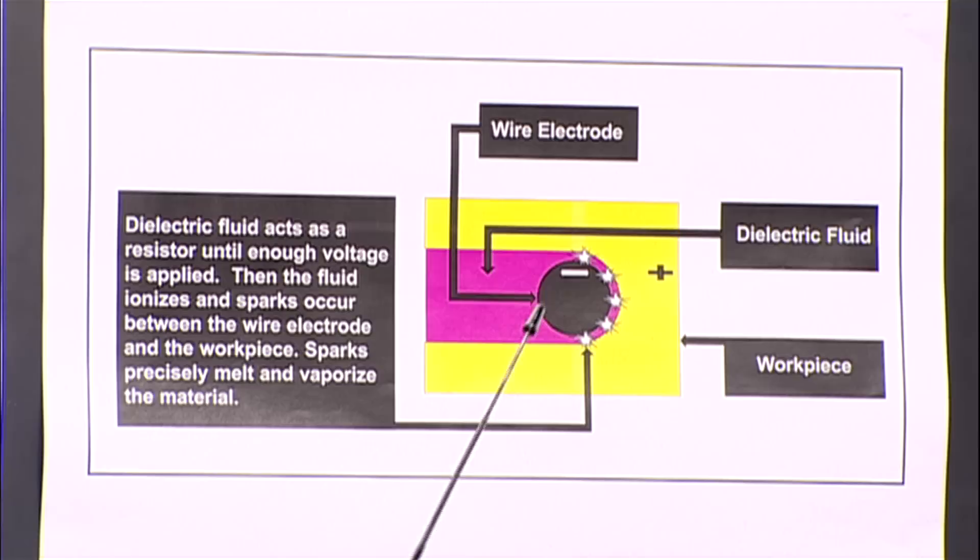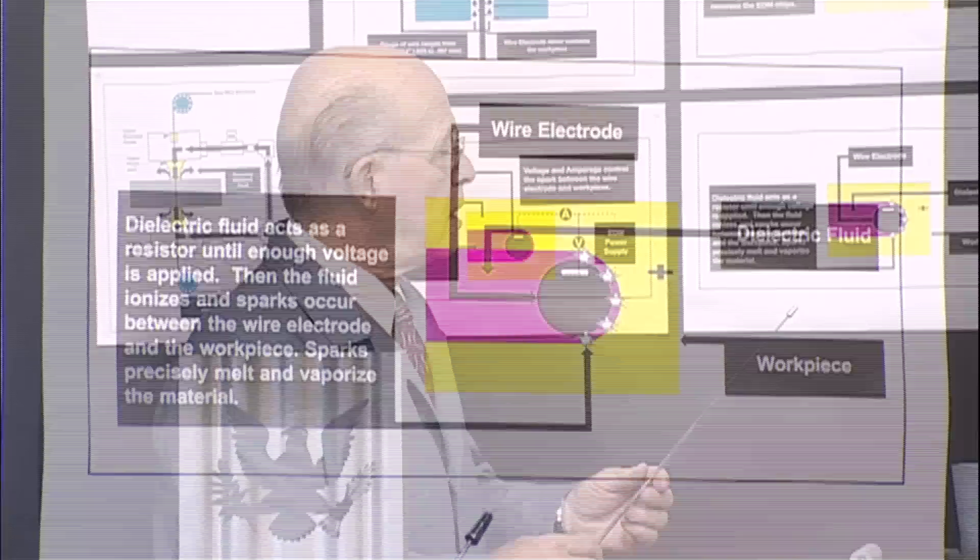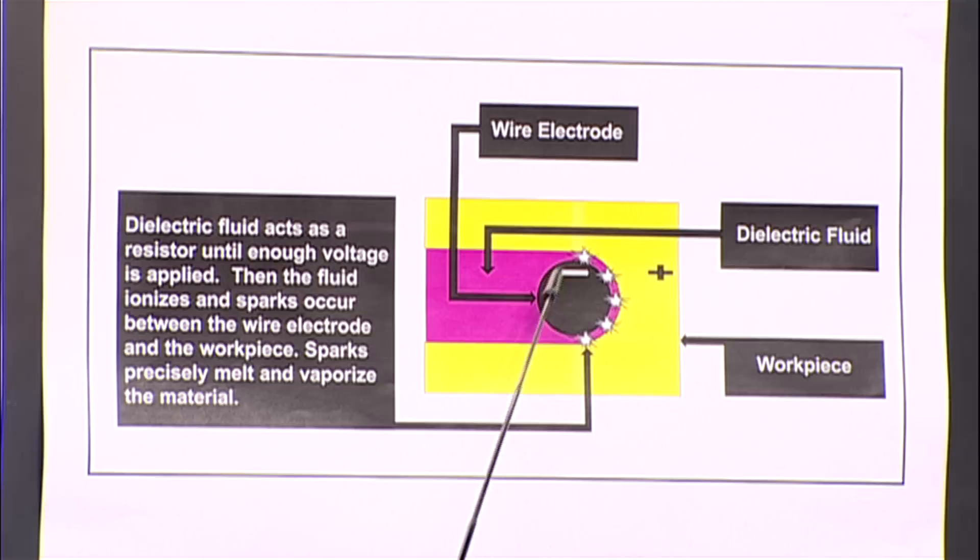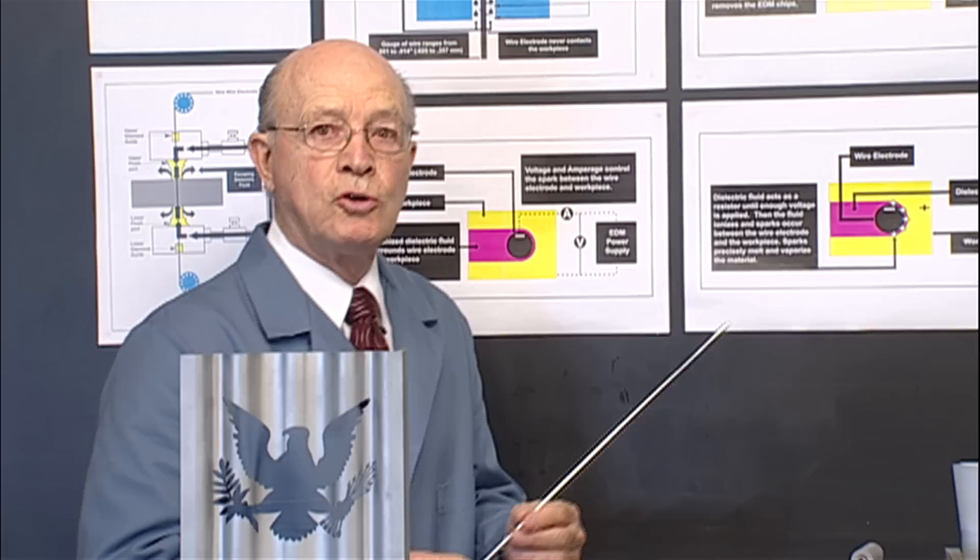Between the electrode and the workpiece, there's this water, this dielectric fluid that acts as a resistor. Now remember, this brass wire in this workpiece, there always has to be a gap. If this wire touches the workpiece, we have a short circuit.